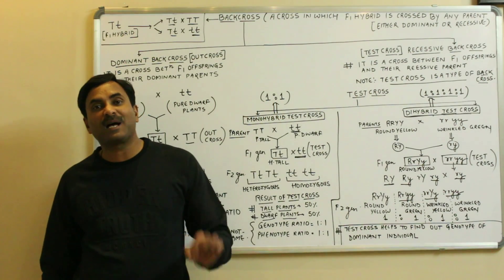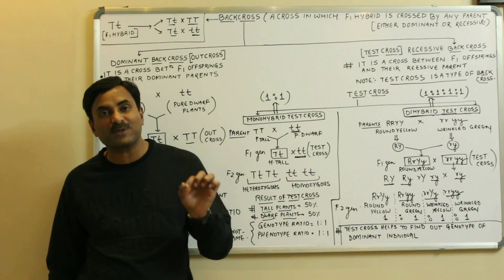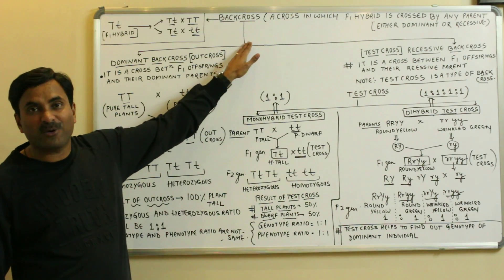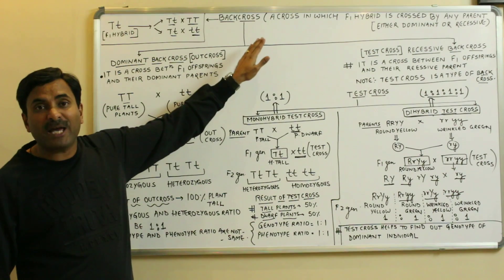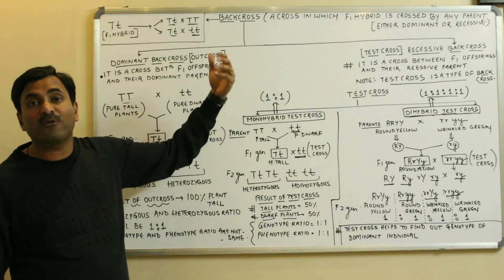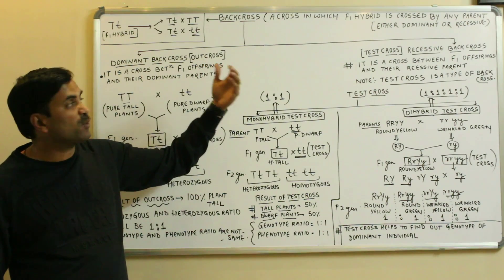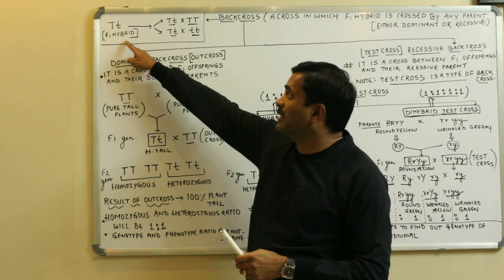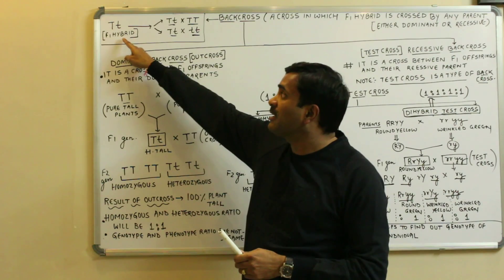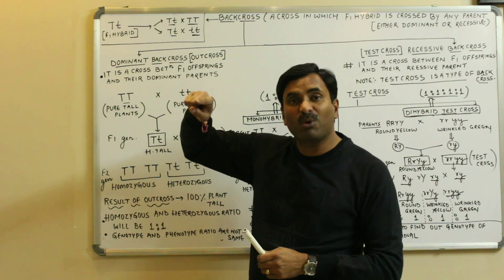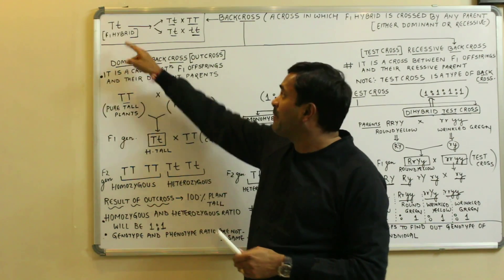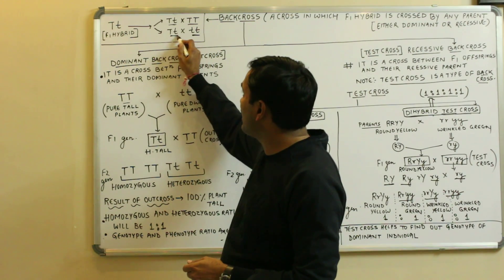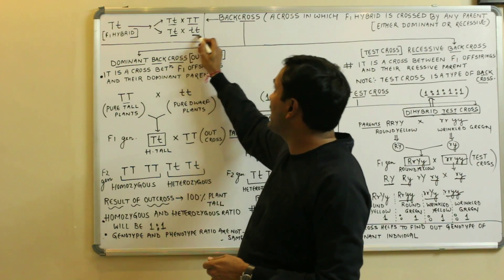Today we are going to discuss a very important cross used in genetics — the back cross. A back cross is a cross in which the F1 hybrid or F1 offspring are crossed with any of the parents. The F1 generation is crossed either by the dominant parent or by the recessive parent. For example, an F1 hybrid capital T small t, when crossed by a dominant or recessive parent, is called a back cross.